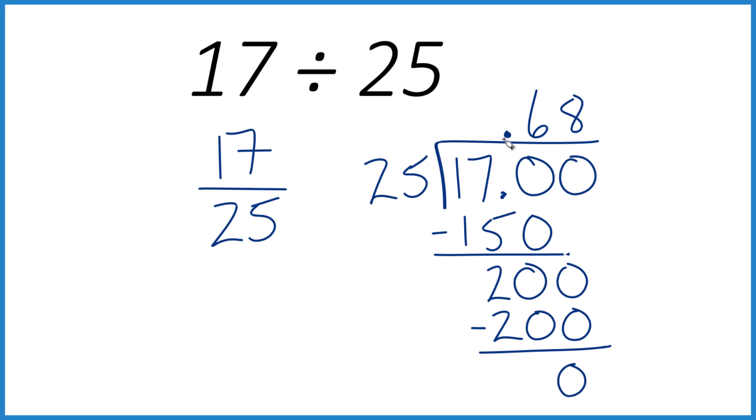17 divided by 25 is 0.68. Let's put a 0 out here so we don't forget the decimal point. So when you divide 17 by 25, you get 0.68. If you multiply 0.68 times 25, you get 17.